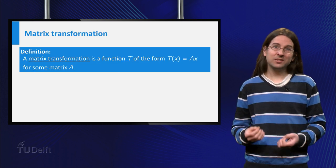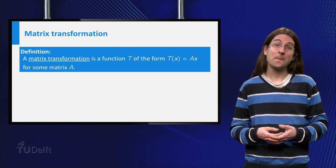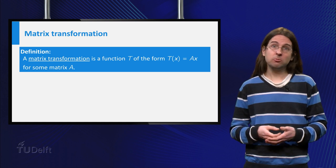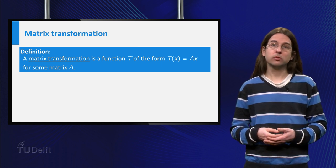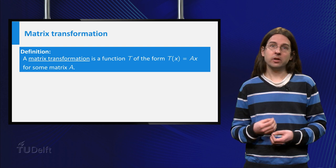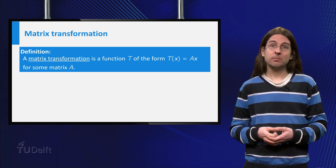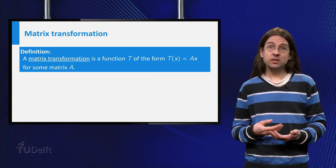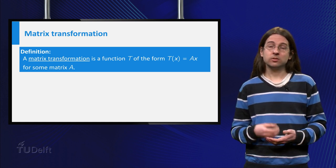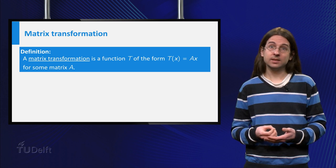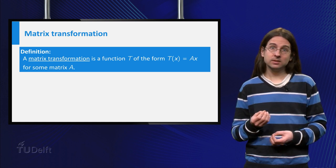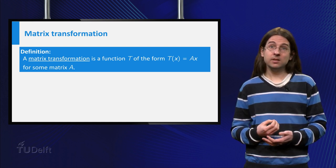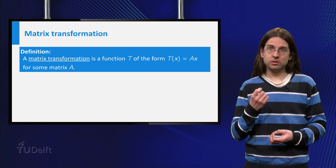Now let us get back to linear algebra. You can rewrite a system of linear equations as the matrix equation Ax = b. The part Ax can be seen as the outcome of a function on vectors. Indeed we can consider the function T(x) = Ax, which sends the input x to the output Ax. A function that can be written in this way is called a matrix transformation.